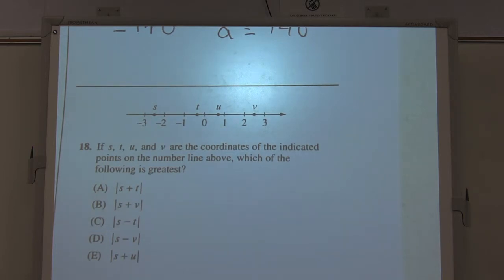If S, T, U, and V are the coordinates on the indicated points on the number line above, which of the following is the greatest? Okay, notice these all have absolute values, you guys. And absolute values are like distance. They're a distance right here. So which one has the farthest distance apart?